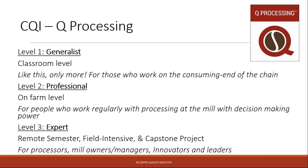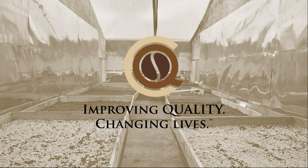Our CQI Processing curriculum also includes Level 2 and Level 3 classes. The Level 2 is our farm-level class for people who work regularly with processing at the mill, hopefully with decision-making power, so they can go back to their place of work and implement changes based on the new information they gained in our course. The expert class is a really intensive year-long course that includes a remote semester, a field intensive, and a capstone project. It's for processors, mill owners or managers, and innovators and leaders in coffee processing. Thank you very much for learning about the five main processing methods with me today. If you want to check out our Q Processing curriculum and all of our other education opportunities at CQI, please visit our website.